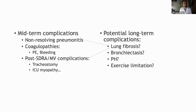Obviously there are also complications from ARDS and mechanical ventilation that we know from other infections — tracheostomy, post-ICU syndrome, ICU myopathy, etc. Potential long-term complications could include lung fibrosis, bronchiectasis, and in cases of pulmonary embolism, possibly pulmonary hypertension or exercise limitation in the future.